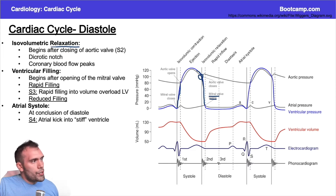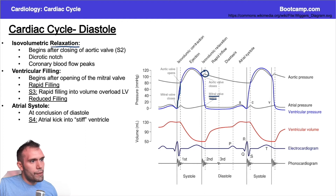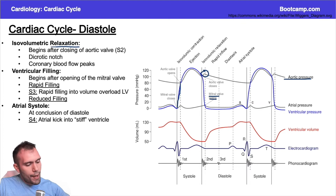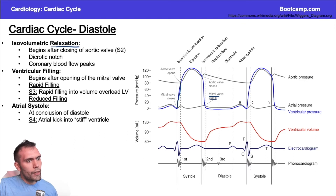There's also the dicrotic notch, which is a notch you see in the aortic pressure curve. That notch essentially represents a slight increase in pressure in early diastole that corresponds to closure of the aortic valve — kind of like back pressure. The dicrotic notch happens after the aortic valve closes.